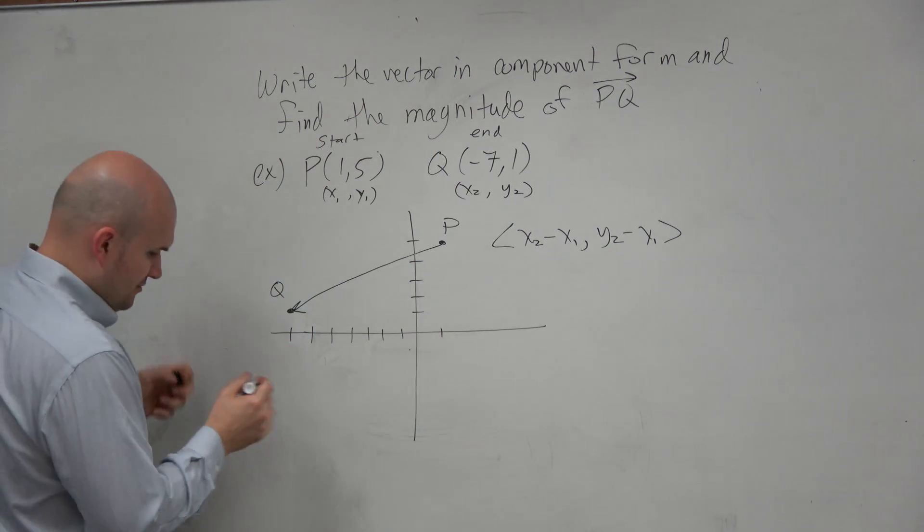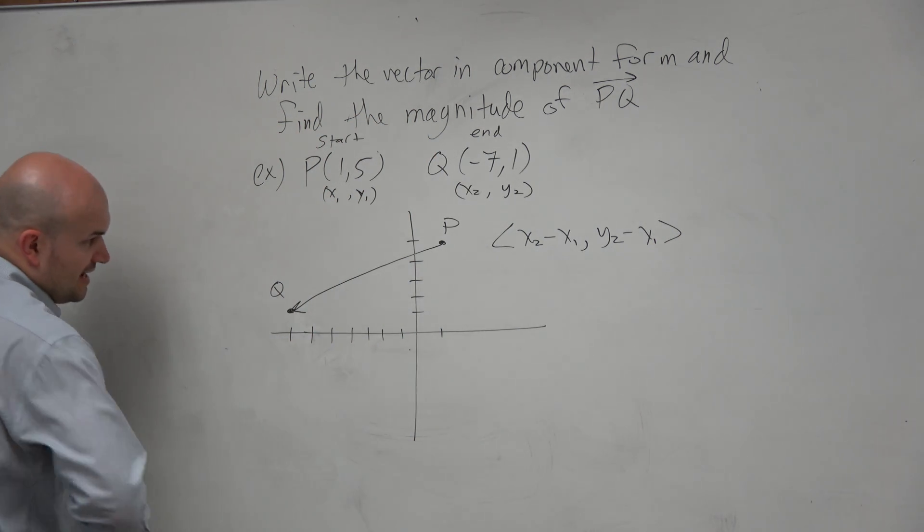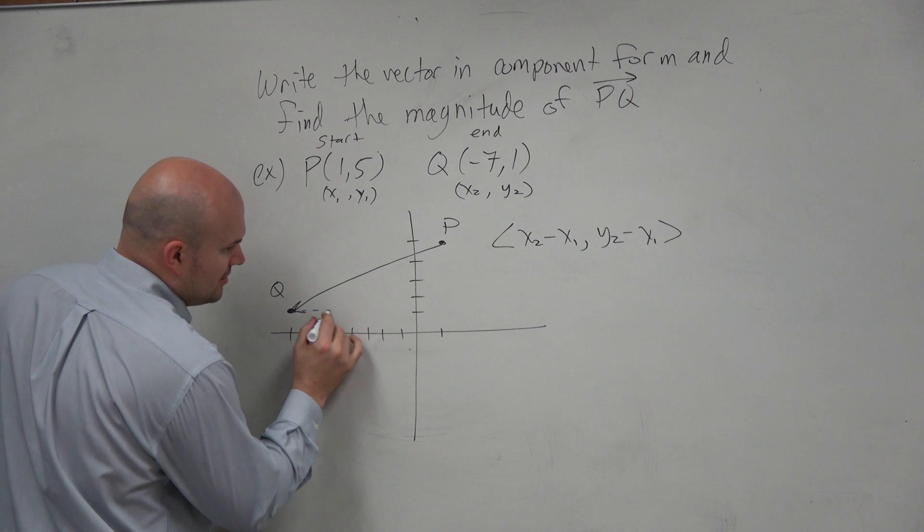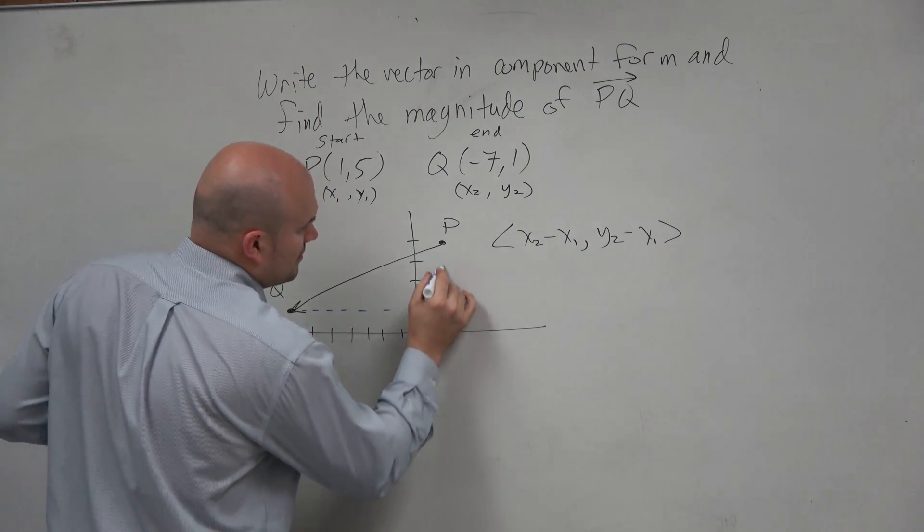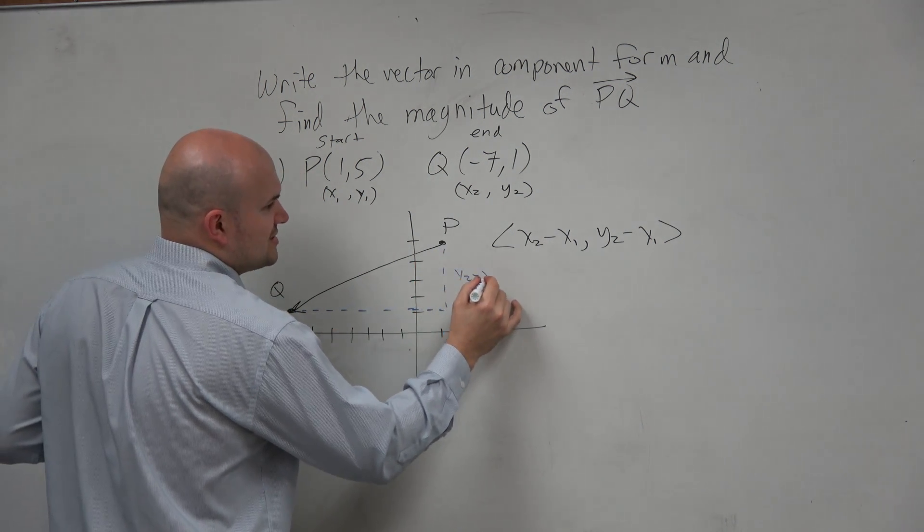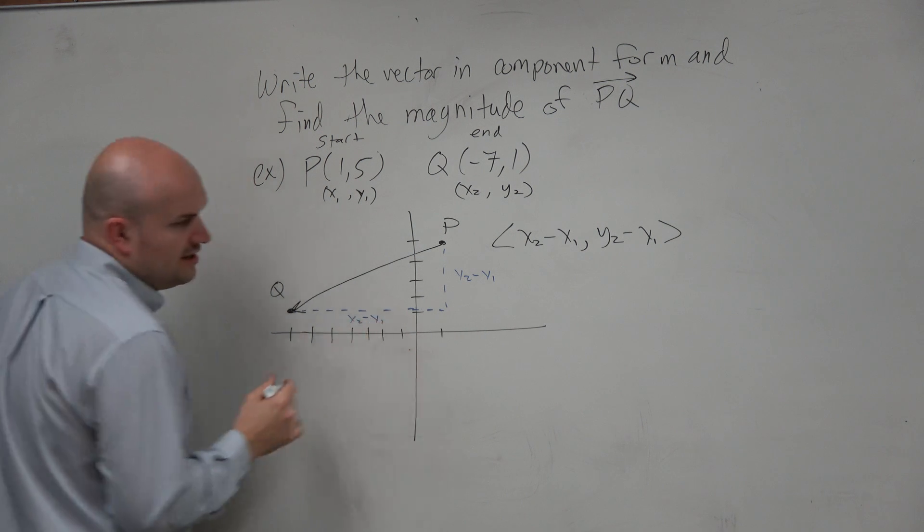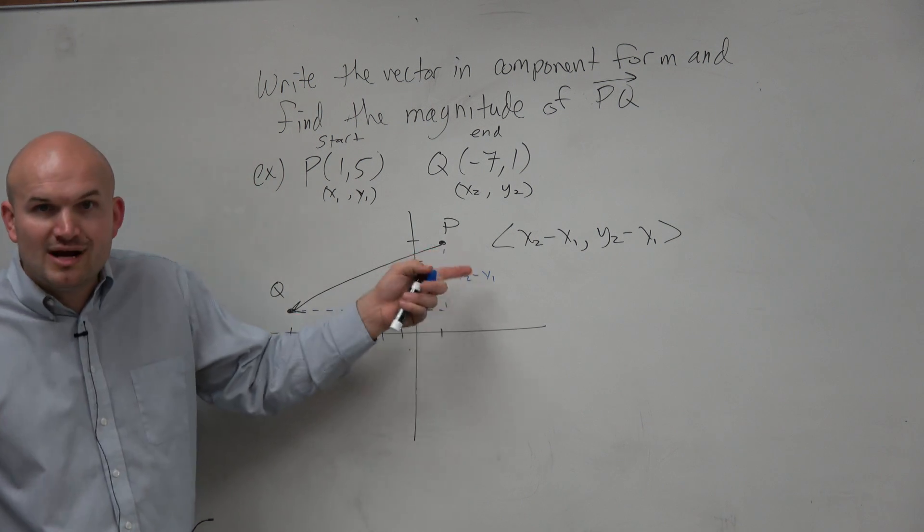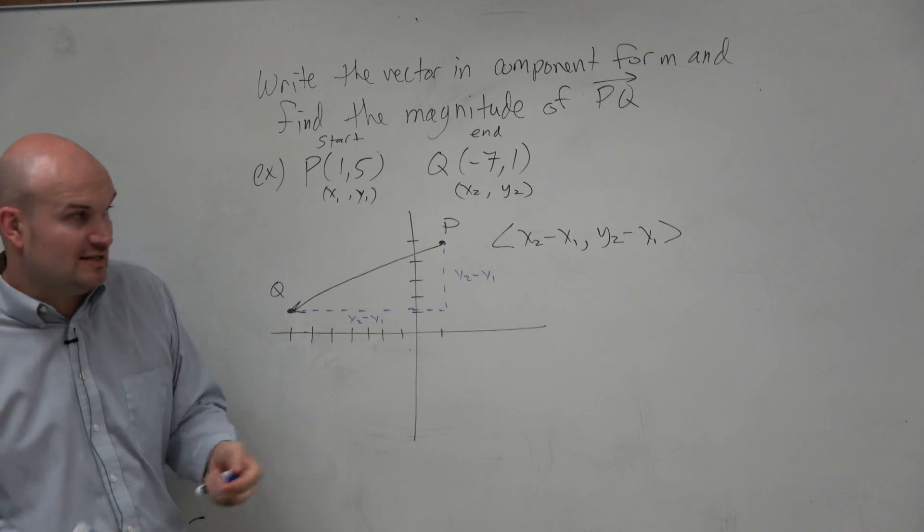Which is basically finding, when doing that, all that's really doing, this is y2 minus y1, this is x2 minus x1. It's basically just finding the lengths of your triangle. I mean, that's really what that's doing.